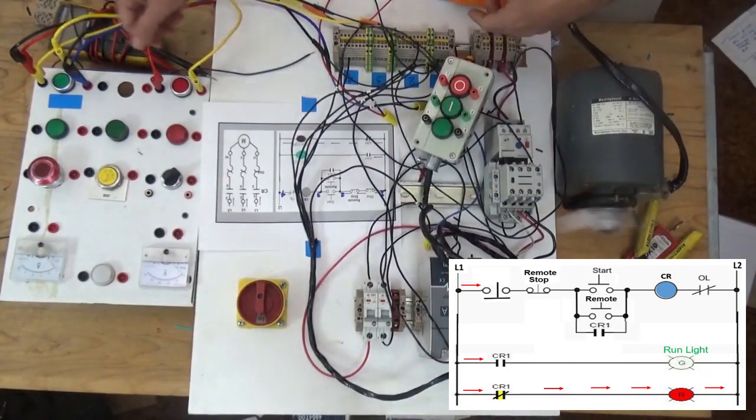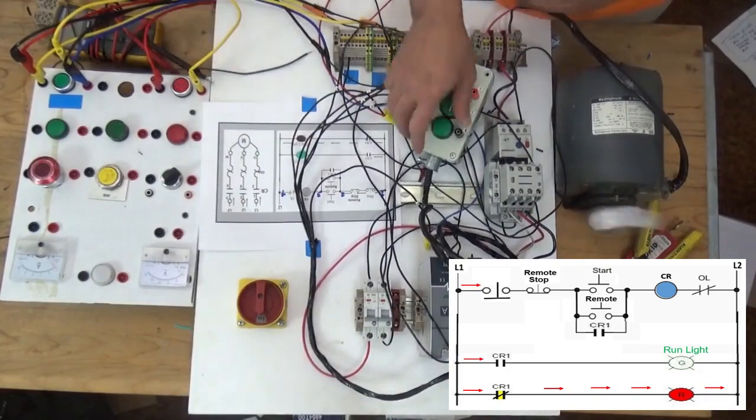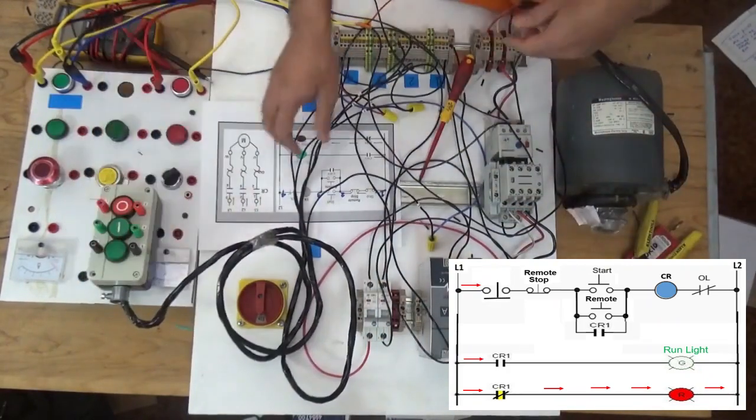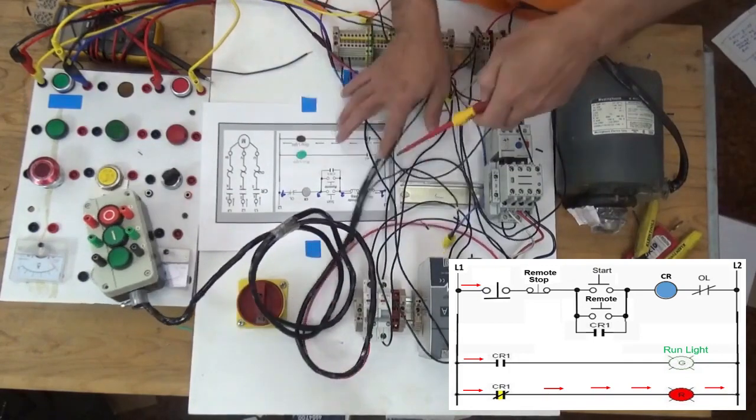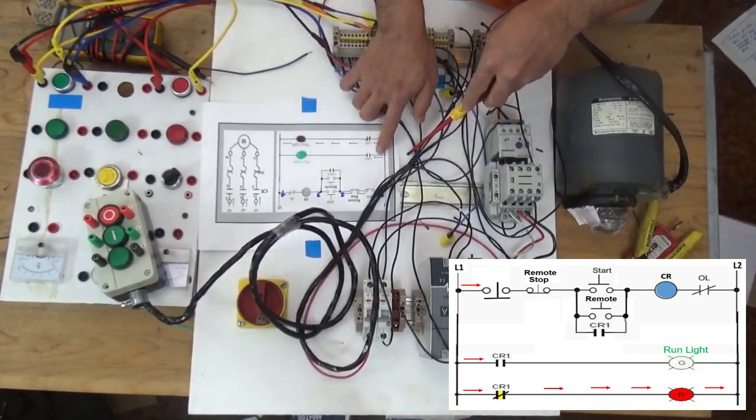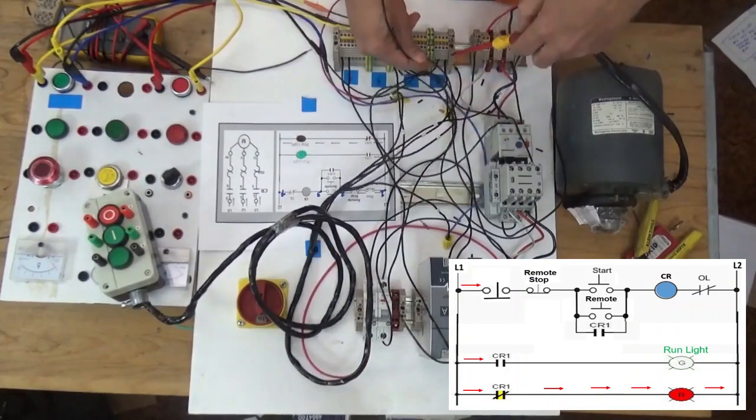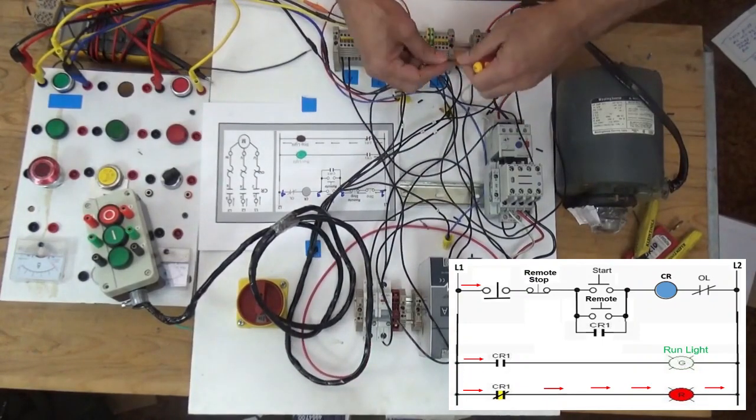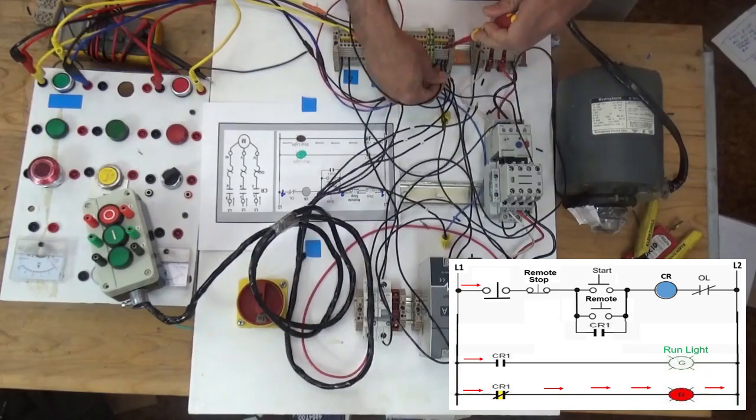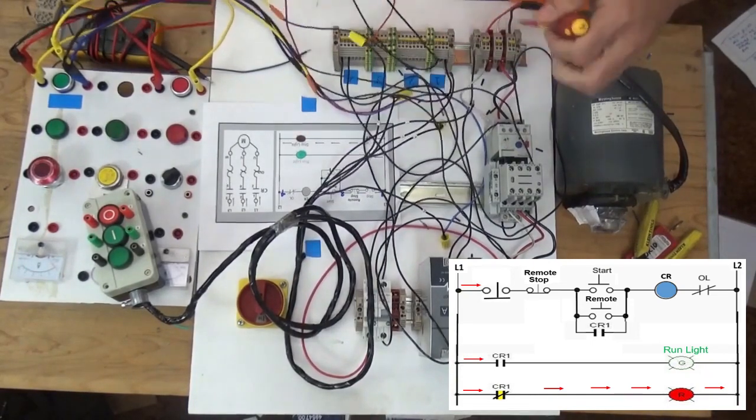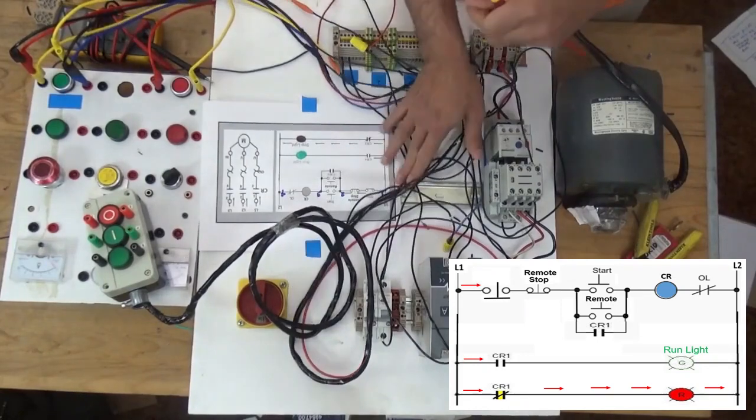You go to the other location, stop it. So that is multiple start stop. Now the next one is we are going to connect the indication light. From line one going to our, going to the normally open.